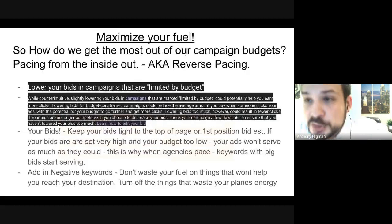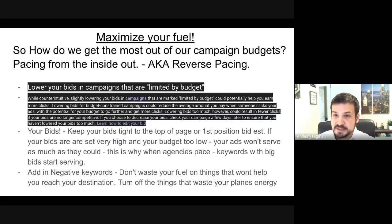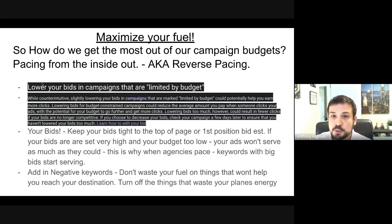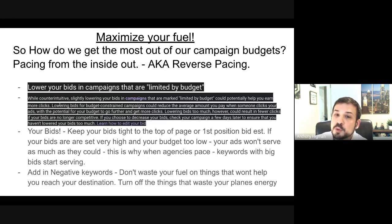So how do we maximize our budget and make sure we're getting the most out of this? I call it reverse pacing. From the Google rule book on campaigns limited by budget: lower your bids. While counterintuitive, slightly lowering bids in campaigns marked 'limited by budget' could potentially help you earn more clicks by reducing the average amount you pay per click.